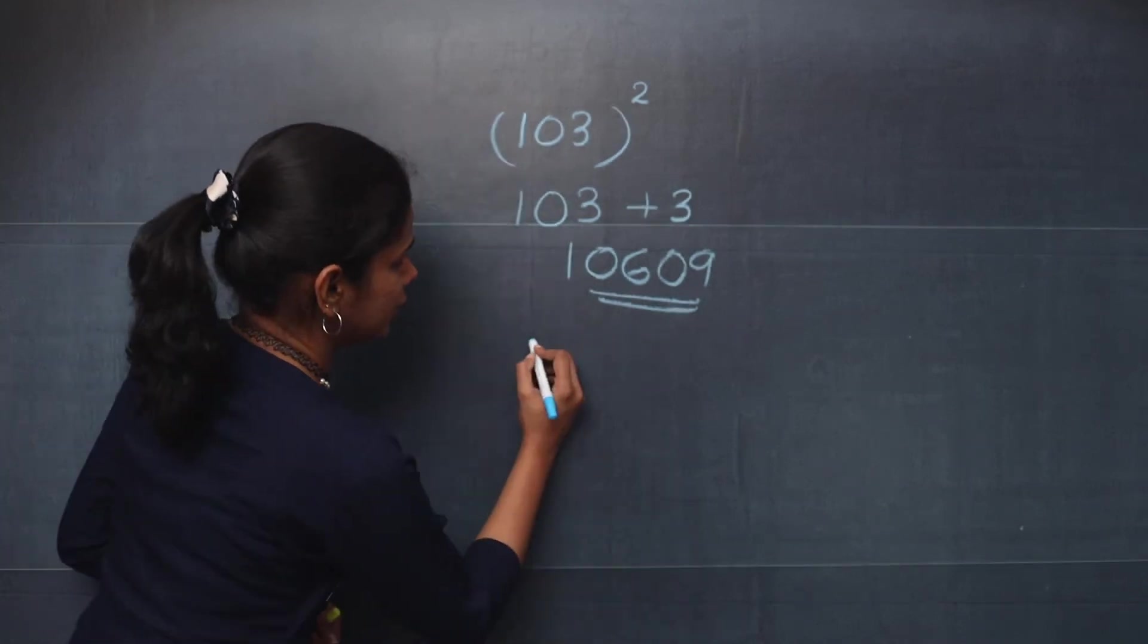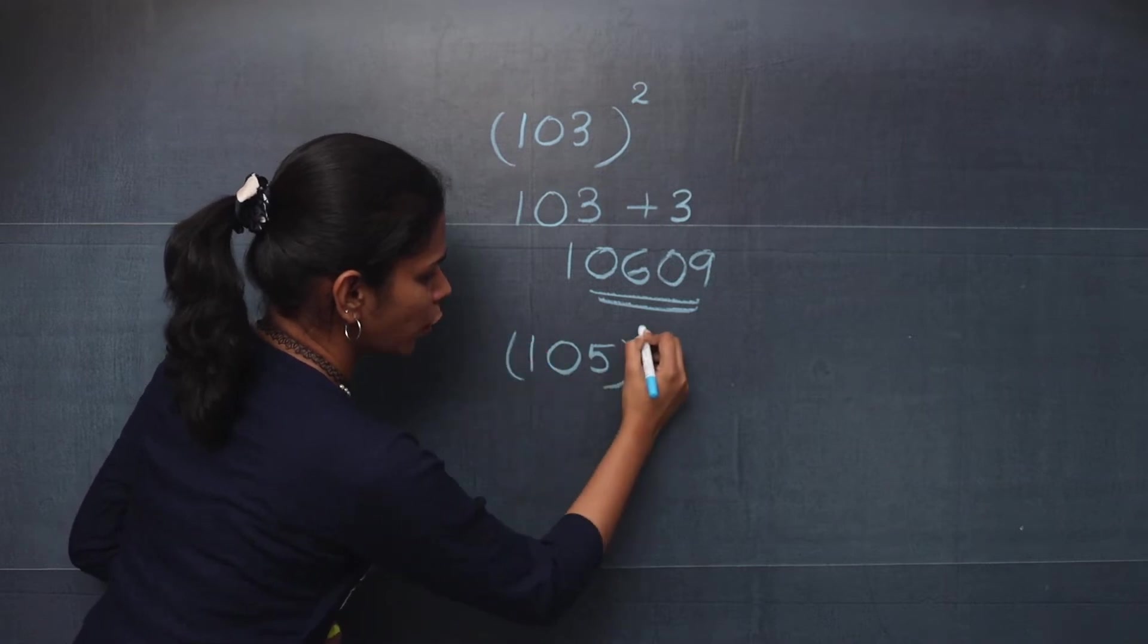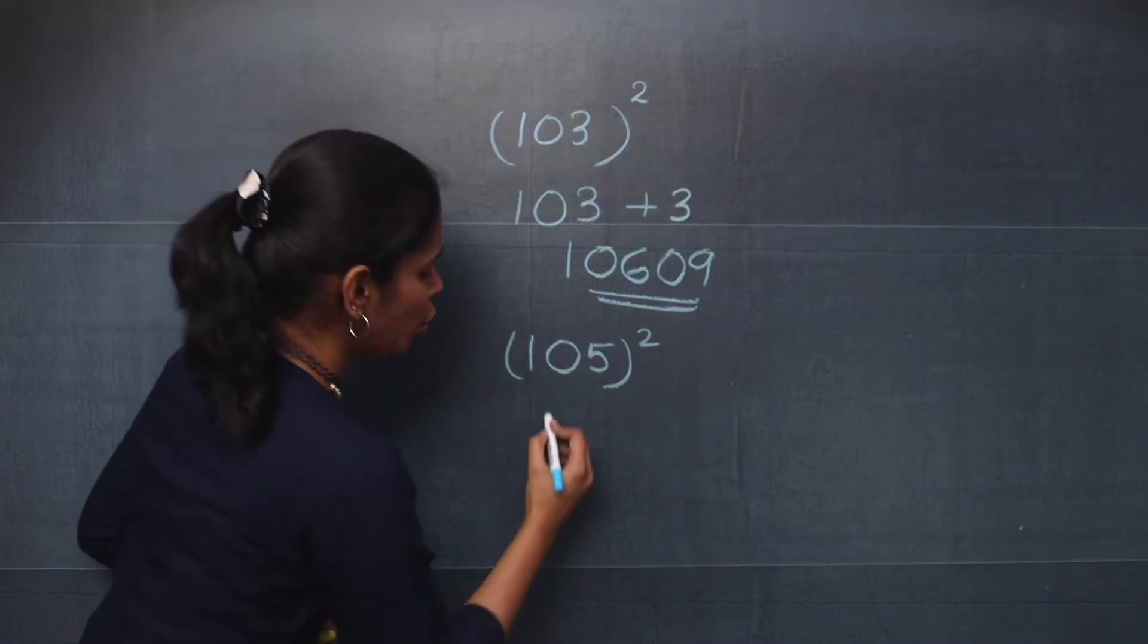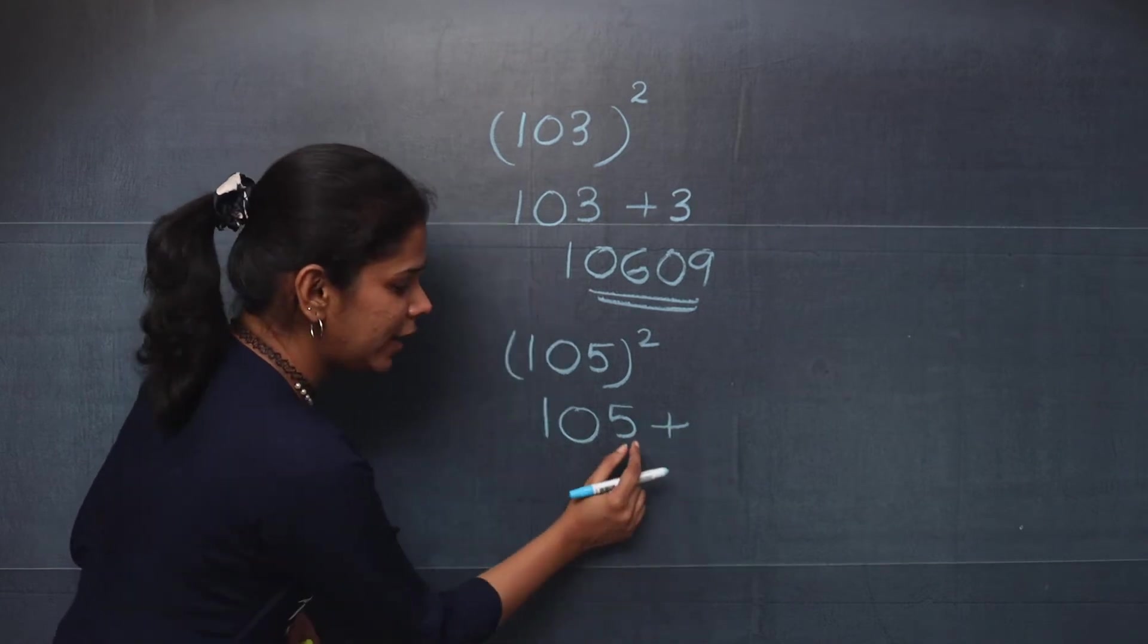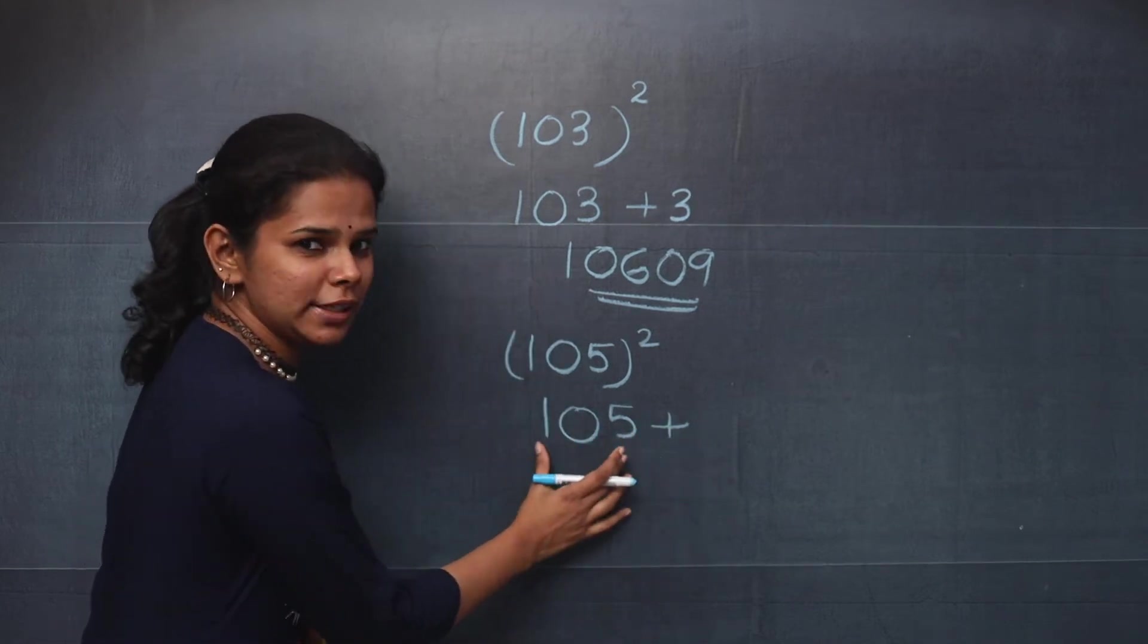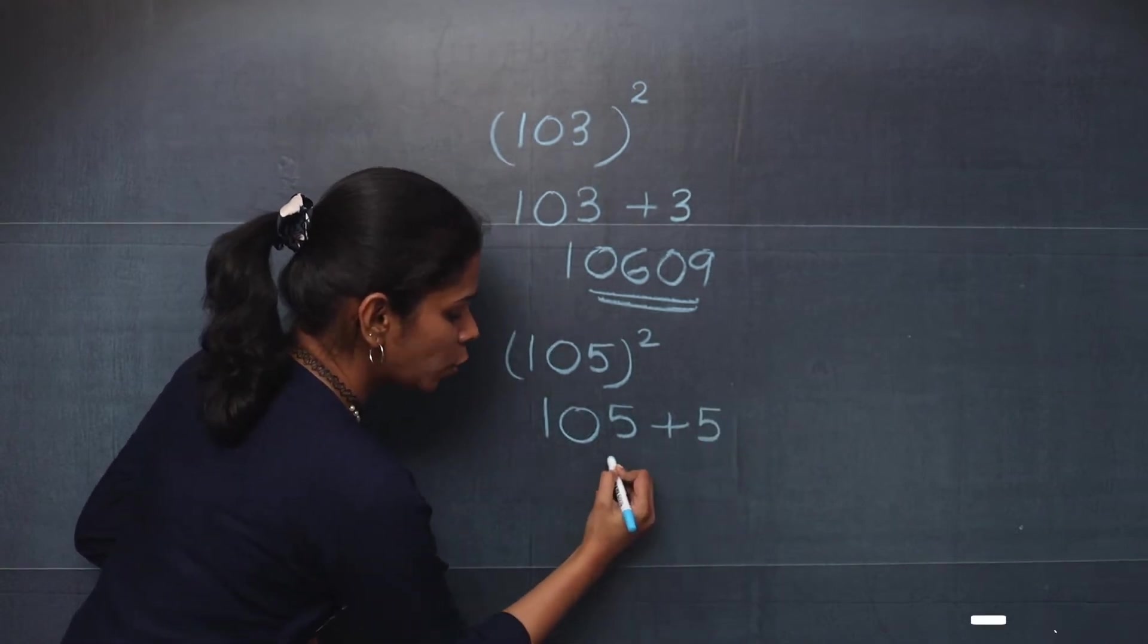Now let's check another question: 105, the whole square. Here also, you will write the number as such. And then we will add the digit in the ones place to this number. So here you have 5. So when you add, you will get 110.